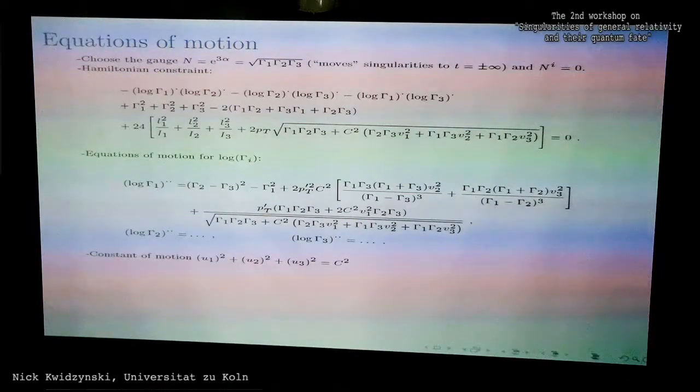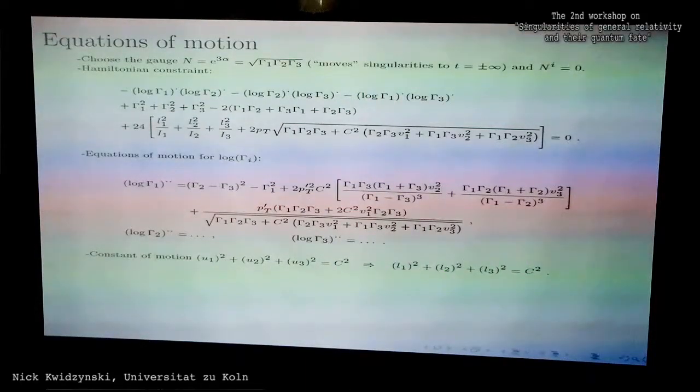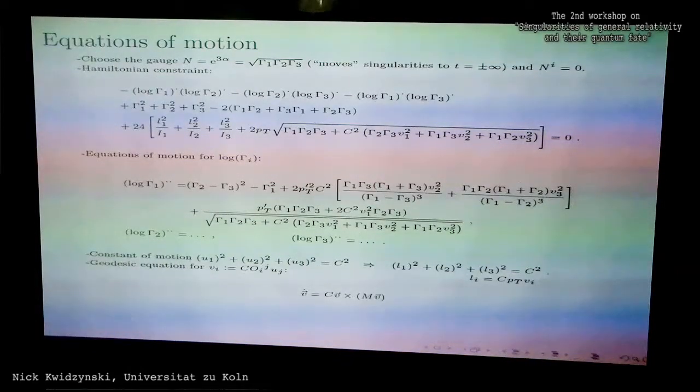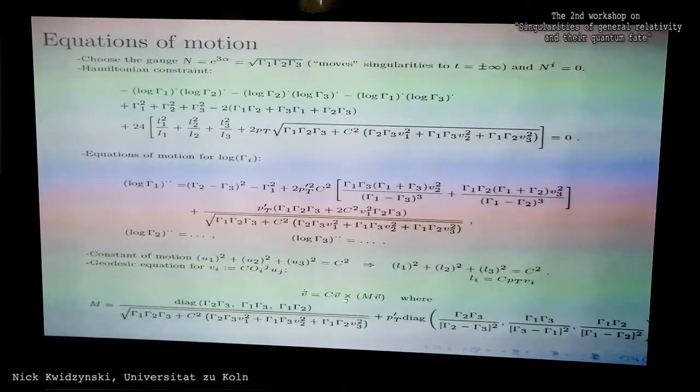There's another constant of motion in this model which can be derived from the geodesic equation: the Euclidean sum of the dust velocities is constant, and from this it also follows that the total angular momentum is a constant of motion. I also slightly rewrite the geodesic equation. I introduce rescaled dust velocities by rescaling them by this constant c, and I also rotate them using this Euler matrix. Then I can bring the geodesic equation into the following form with some complicated matrix here, and the times is just the usual cross product in Euclidean space.